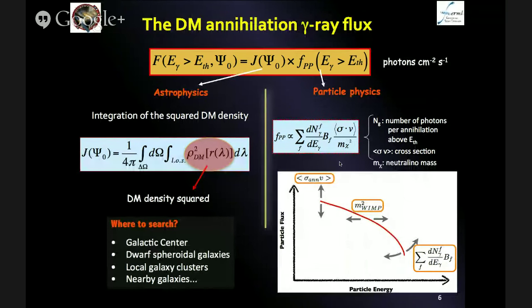The gamma ray flux you may expect in your telescopes above a particular energy threshold is essentially given by the product of two terms. On one hand you have the J-factor term, which encloses all the astrophysical considerations — essentially information about how dark matter is distributed in the object. The second term is the particle physics term, which contains all the particle physics considerations: the mass of the dark matter particle, the cross-section of interaction, the annihilation channel, and so on. The J-factor is proportional to the square of the dark matter density along the line of sight, so you integrate the dark matter density distribution squared. This tells you where to search: you want to point your telescope at places where you expect the largest concentrations of dark matter, like the galactic center, nearby dark galaxies, and local galaxy clusters.